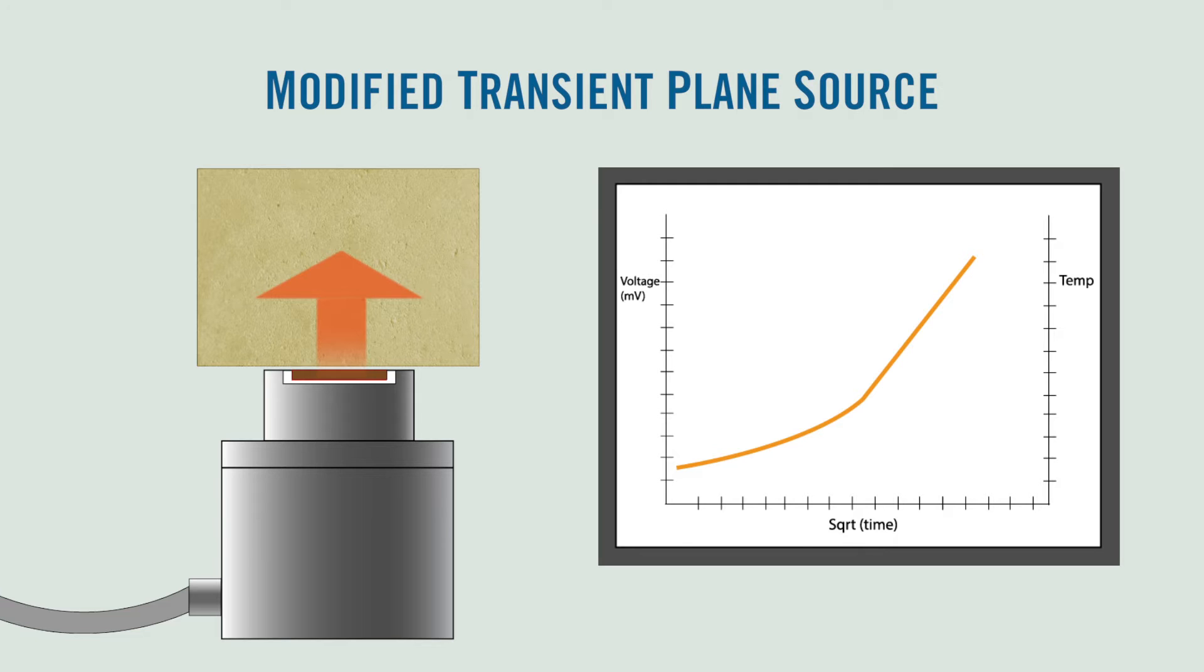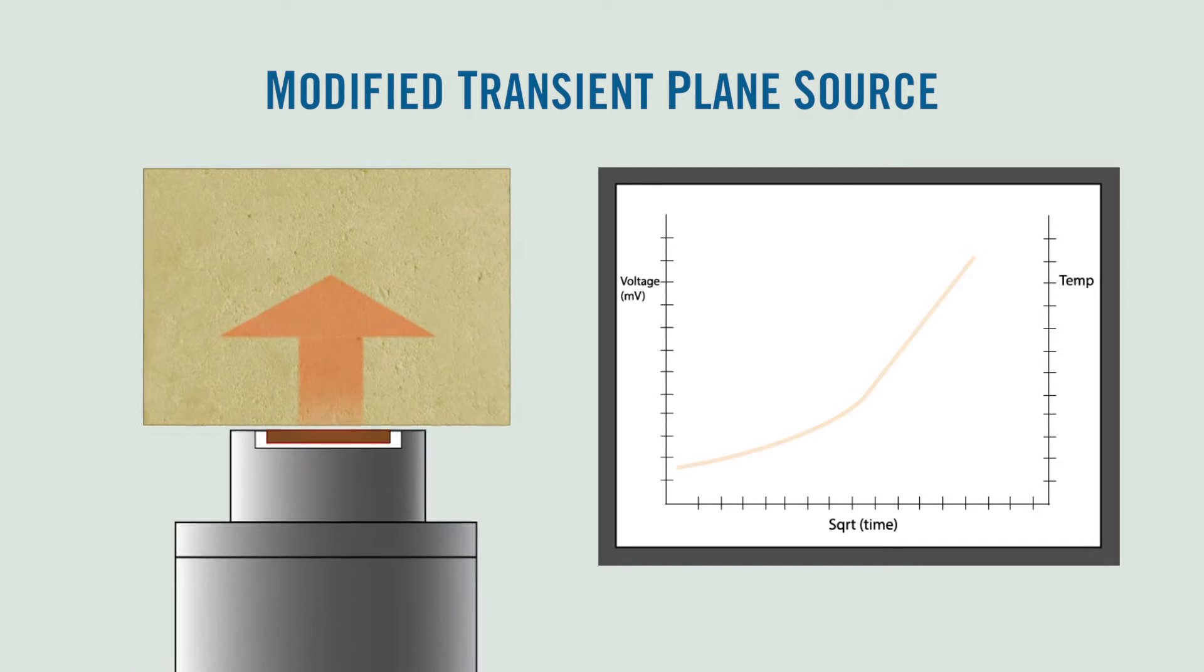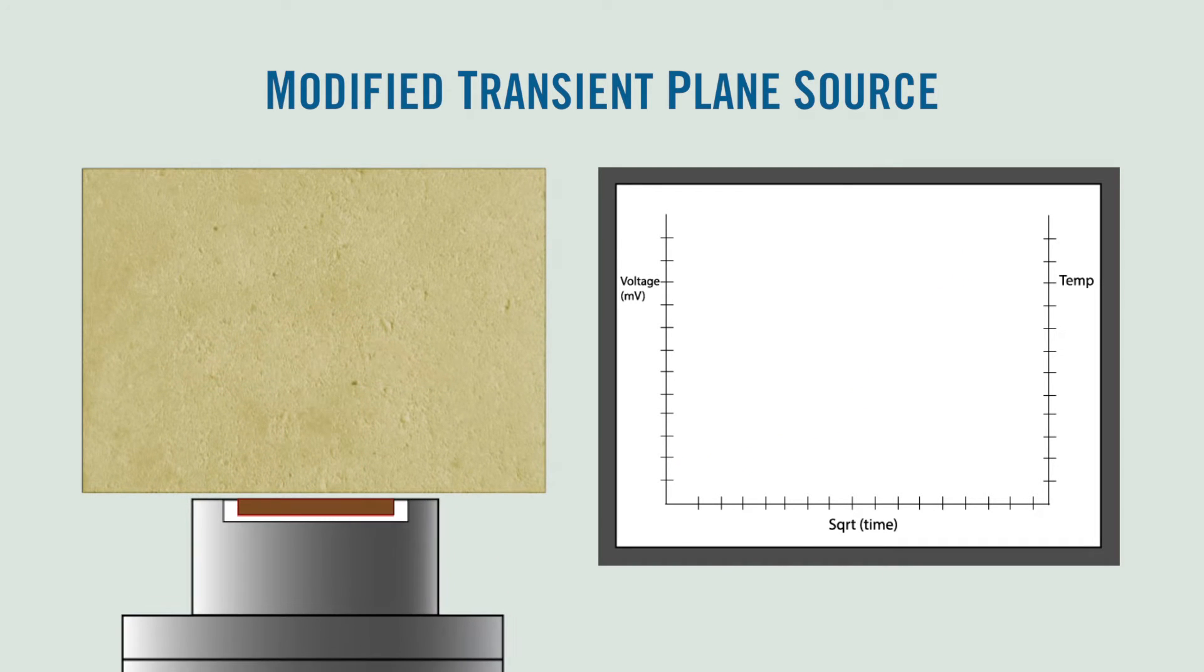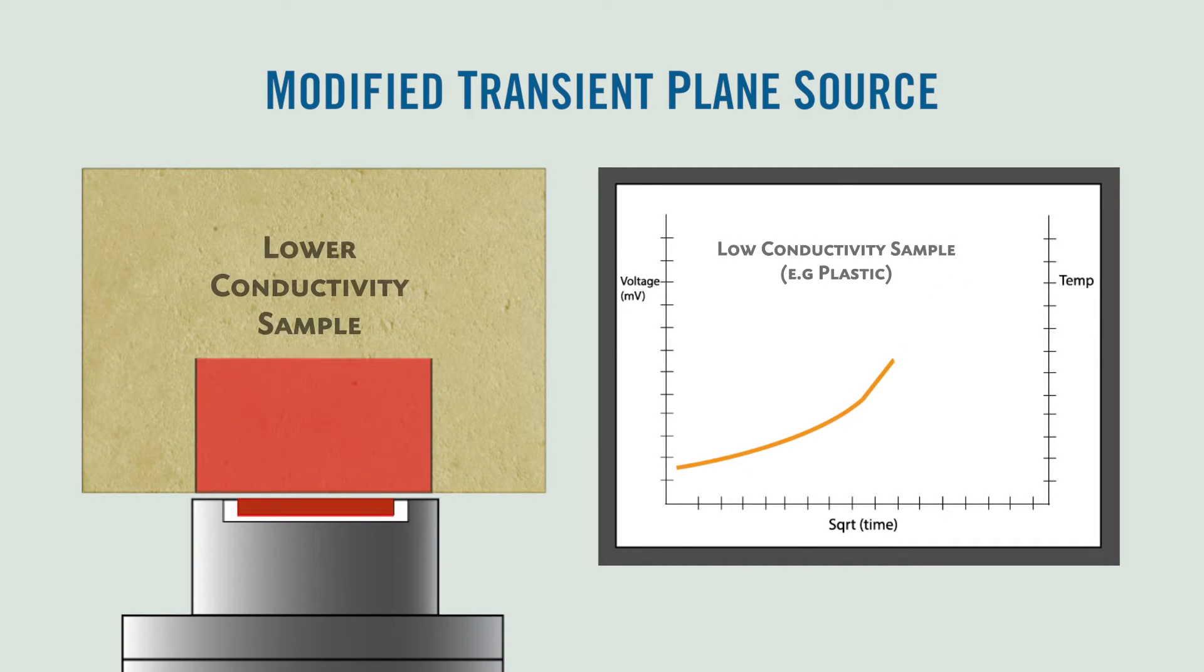The thermal conductivity of the sample is inversely proportional to the rate of increase in the temperature monitored. The lower the thermal conductivity of the sample, the steeper the rise in temperature and vice versa.